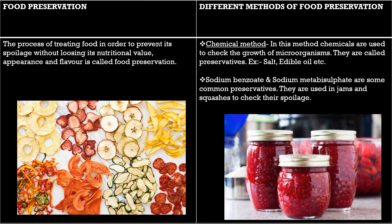Now we will discuss some common methods to preserve food at home. Number one is the chemical method. In this method, some chemicals are used — like salt and edible oil — that are commonly used to check the growth of microorganisms. They are also known as preservatives. Some common preservatives used for making squashes, jams, etc. are sodium metabisulphate, sodium benzoate and citric acid.